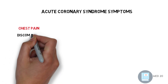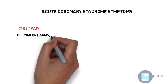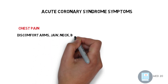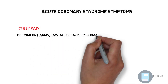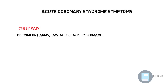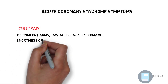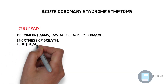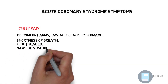Other symptoms include discomfort of the arm, jaw, and neck, or back, or stomach — especially in the epigastric region — which could be radiation of the chest pain or the main site. Additional symptoms include shortness of breath, lightheadedness, nausea, vomiting, sweating, and palpitation.